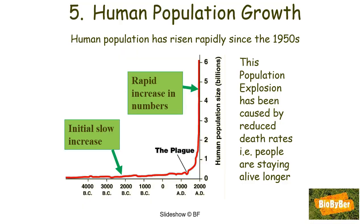Now let's turn our attention to the human population. Since the beginning of mankind, human numbers increased slowly, even dipping in the 1600s due to the plague. However, since the 1950s the number of humans has grown very fast and has now reached 7 billion. This rapid increase is often called the population explosion, and it is caused by reduced death rates — people are staying alive longer. Population numbers must always be related back to birth rates and death rates.